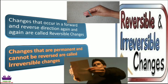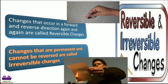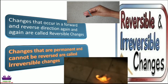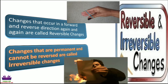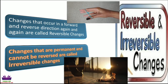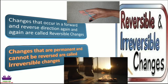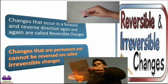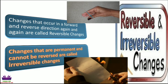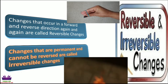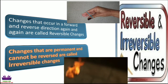The next type of changes we are going to study is reversible and irreversible change. Changes that occur in a forward and reverse direction again and again are called reversible changes. One example is stretching a rubber band — when you stretch a rubber band forward and back again and again, it comes back to its original shape, so this is a reversible change. Changes that are permanent and cannot be reversed are called irreversible changes — once the change takes place, you will never get your original item back.